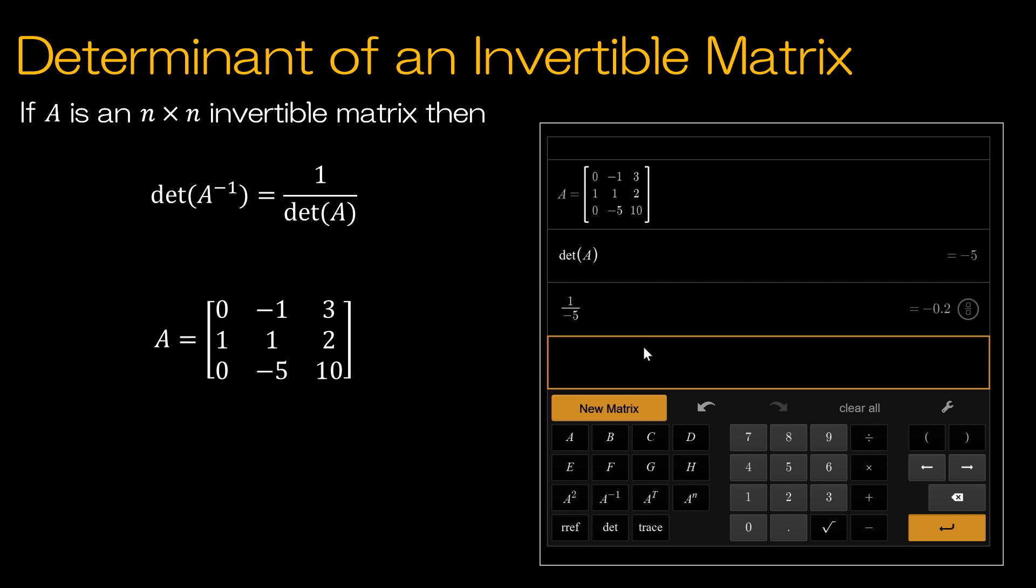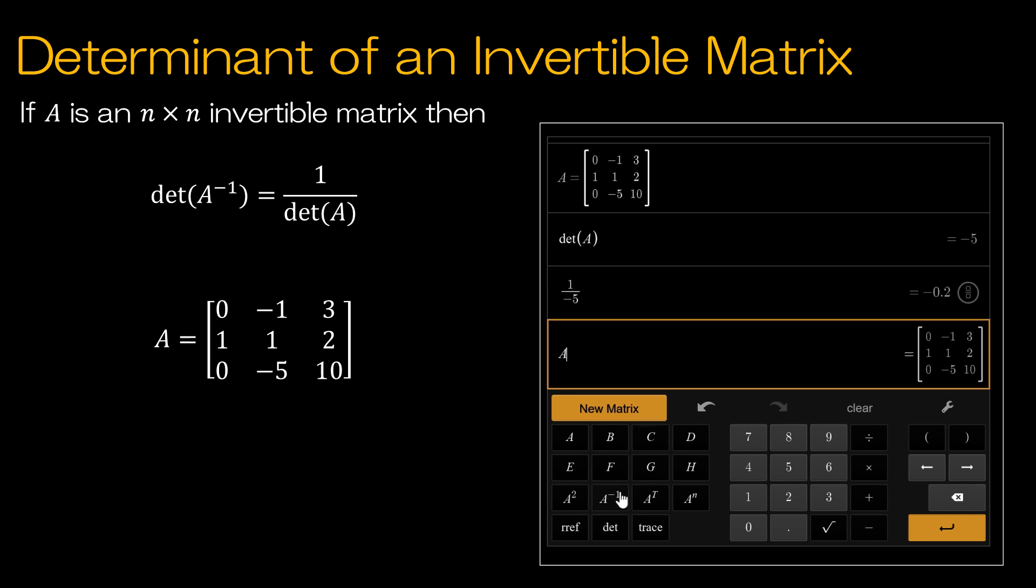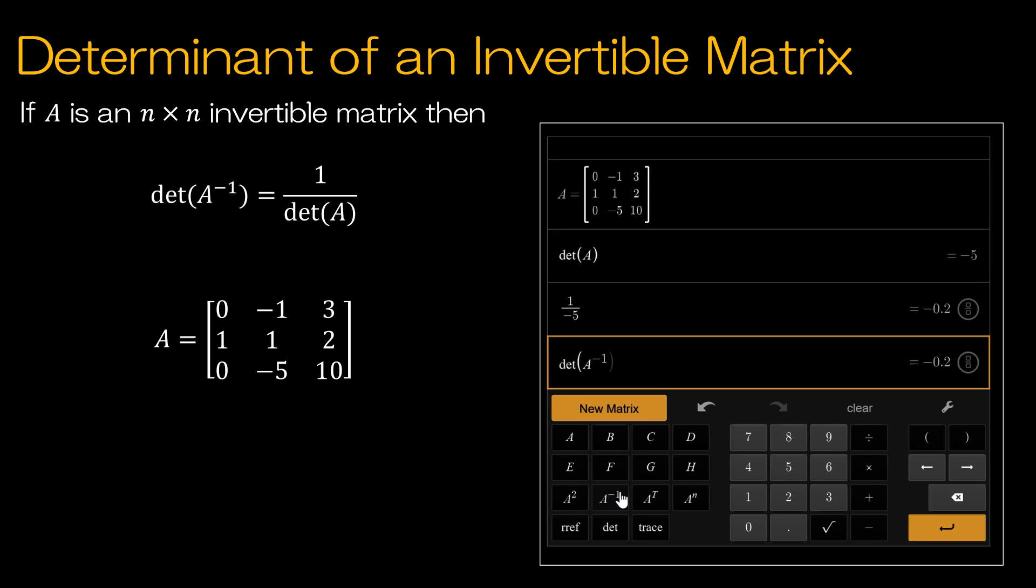Now let's find A inverse. And let's actually find the determinant of A inverse. And notice it is, in fact, negative 0.2 or negative 1 fifth, just as we expected.